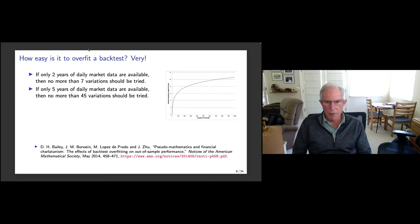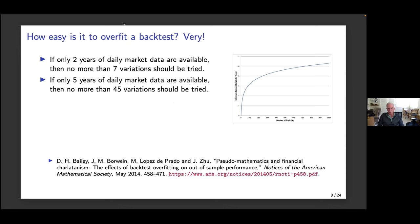Marcos and I published a paper where we found the result comparing minimum backtest length time needed if you're trying various variations of a model. It's really not very much. For instance, if you have a model based on daily market data with five years available, you better not try more than 45 variations or you're likely to find at least one variant giving a Sharpe ratio of 1.0 or better.